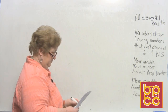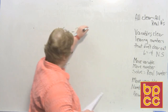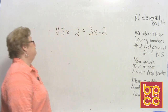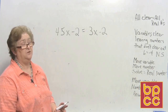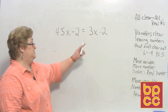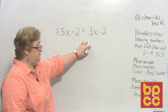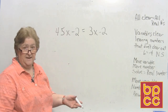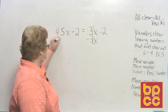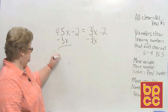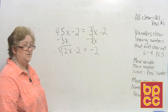Let's try 4(5x) − 2 = 3x − 2. Distribution may already be done. Start with your x's — don't look at those 2s. I've chosen to subtract 3x because I'd like a positive x. Taking away 3x from both sides: 45 minus 3 is 42x, so 42x − 2 = −2. Now it's time to move the 2.